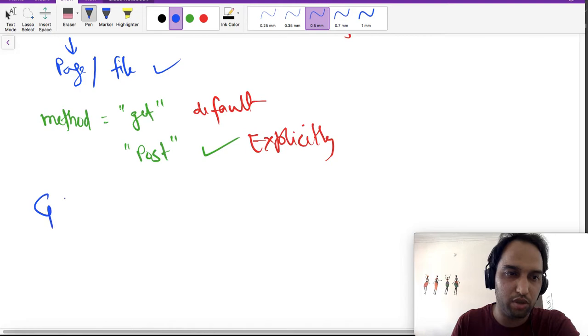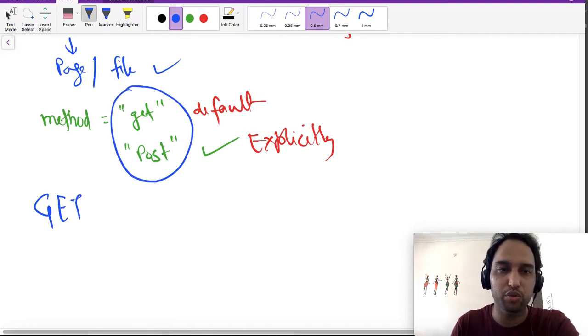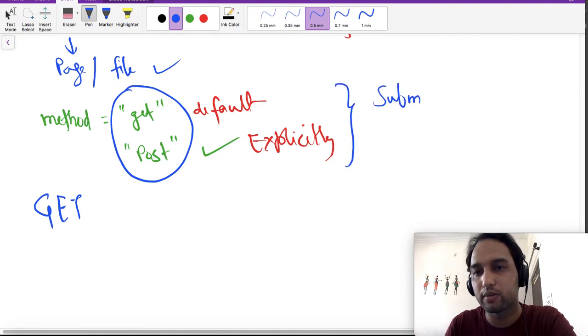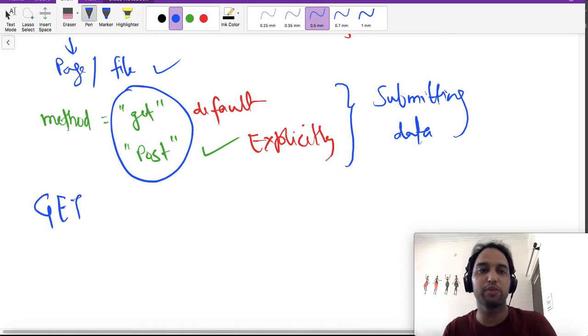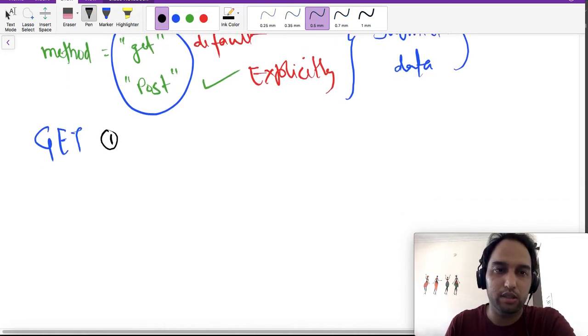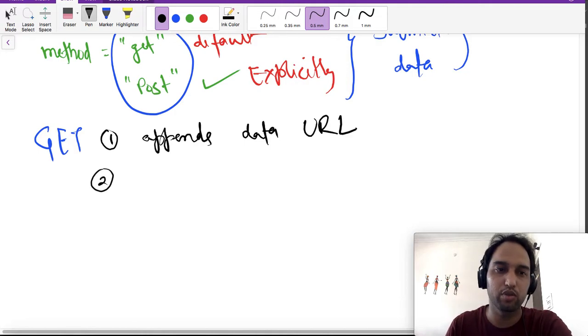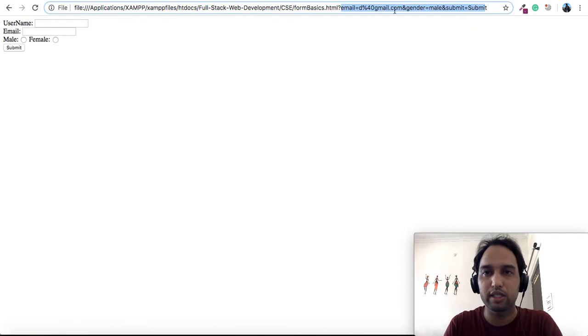Let us discuss about GET element first. When we are talking about GET, these are HTTP methods which are used to send data. Don't confuse by their names - GET seems like we are getting data and POST seems like we are posting data, but it is not true. In both cases we are submitting data. The only difference is the way we are submitting data. So what happens when we use GET method? The data is appended to URL. You have already seen this - data is appended to URL.